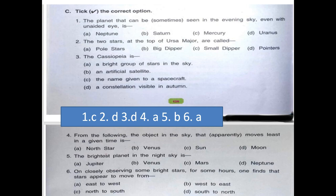Third one, the Cassiopeia is a bright group of stars in the sky, an artificial satellite, the name given to a spacecraft, and D is the constellation visible in autumn. And our D option is correct.